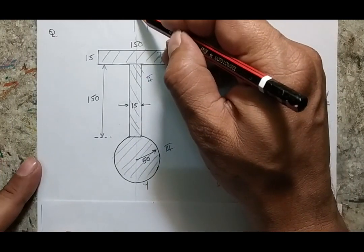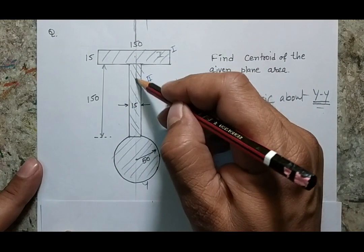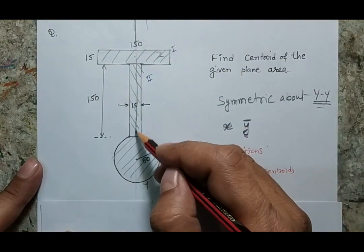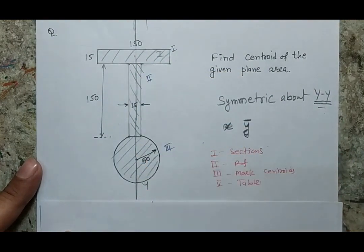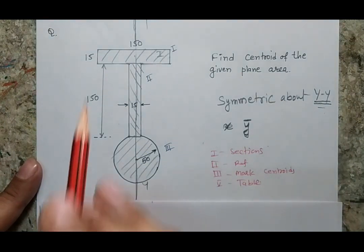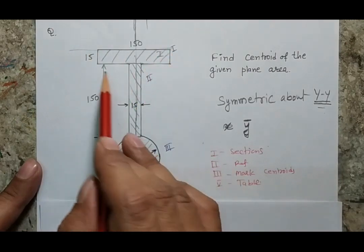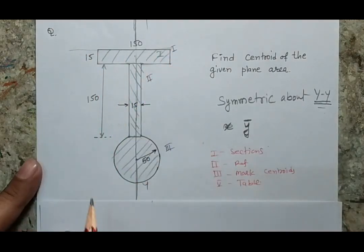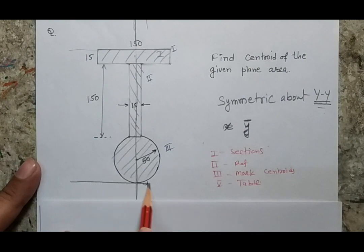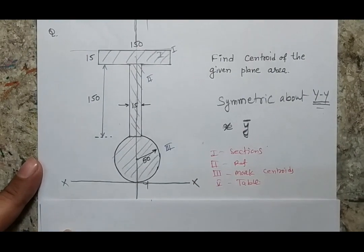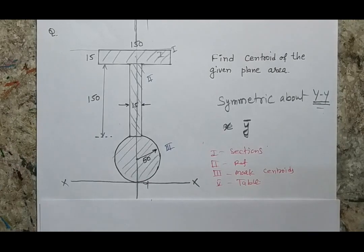Since the body is symmetric about the vertical line, that is one reference — and I am not going to calculate x-bar. For the second reference, I could place it at various positions, but I usually make the reference at the extreme bottom position. So this is my second reference line.